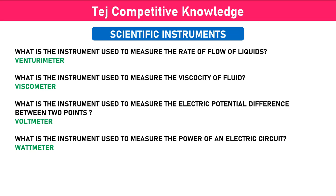What is the instrument used to measure the electric potential difference between two points? Voltmeter. What is the instrument used to measure the power of an electric circuit? Wattmeter.